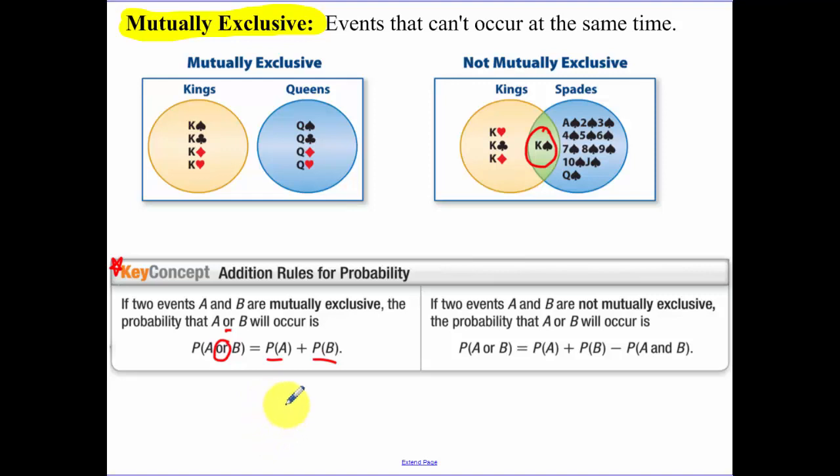But if the events are not mutually exclusive, the probability of A or B, you add the probability of A, you add the probability of B. Now since the events are not mutually exclusive, you have to subtract the probability of A and B. Because if you think about it, you've added the probability of A and B twice because they're in both of the circles. You've added this king that's a spade twice. So you need to subtract it so that you've only considered him once.